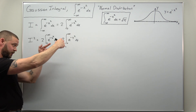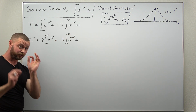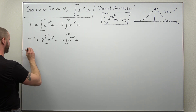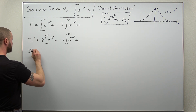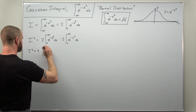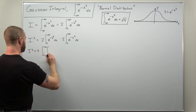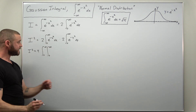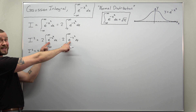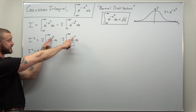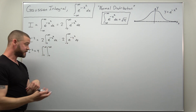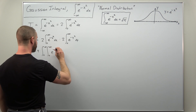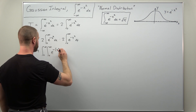To convert this to a double integral, we combine these single-variable integrals into a single double integral. We multiply our twos to get a factor of four, and now have a double integral integrating both x and y from zero to infinity. Since we're multiplying the exponential functions, we can add their exponents, factor out a negative, and write our function as e to the negative quantity x squared plus y squared.